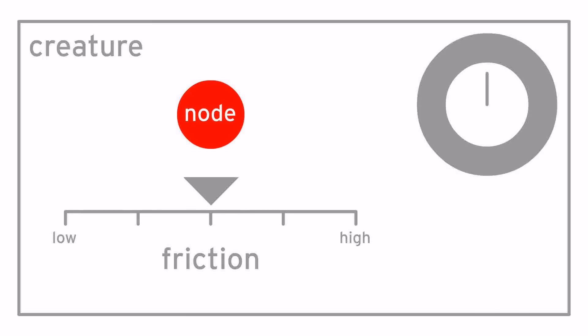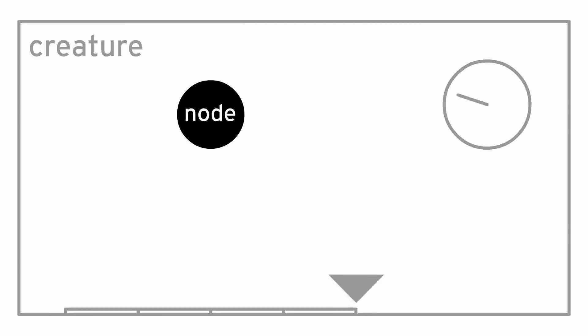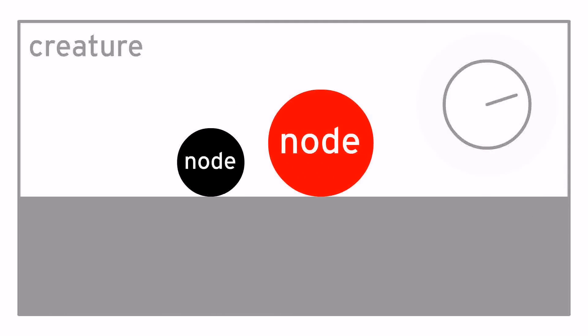This is a node. Nodes can vary in friction, from white being very low friction to black being very high friction. Nodes collide with the ground, but they don't collide with each other.